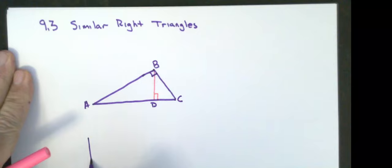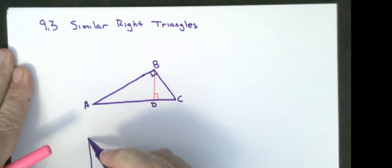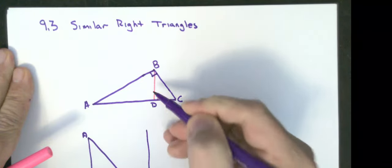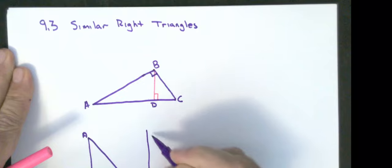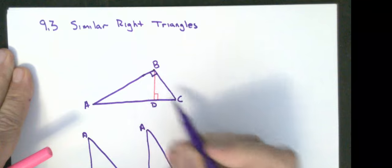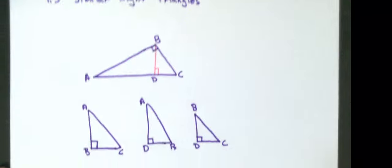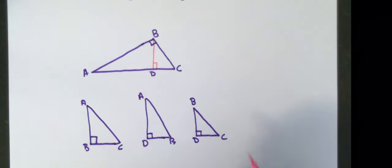What I'm going to do is I'm going to draw all three of those triangles in the same orientation. I'm going to draw the super big right triangle. That would be ABC. I'm going to now draw the medium triangle, which is going to be ADB. I'm going to draw the little triangle, BDC. All three of those triangles are similar.